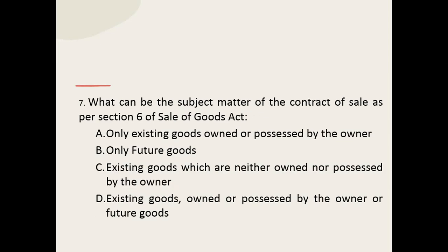Q7: What can be the subject matter of the contract of sale as per Section 6 of the Sale of Goods Act? The options are: only existing goods owned or possessed by the owner; only future goods; existing goods which are neither owned nor possessed by the owner; existing goods owned or possessed by the owner or future goods. The correct option is: existing goods owned or possessed by the owner or future goods.